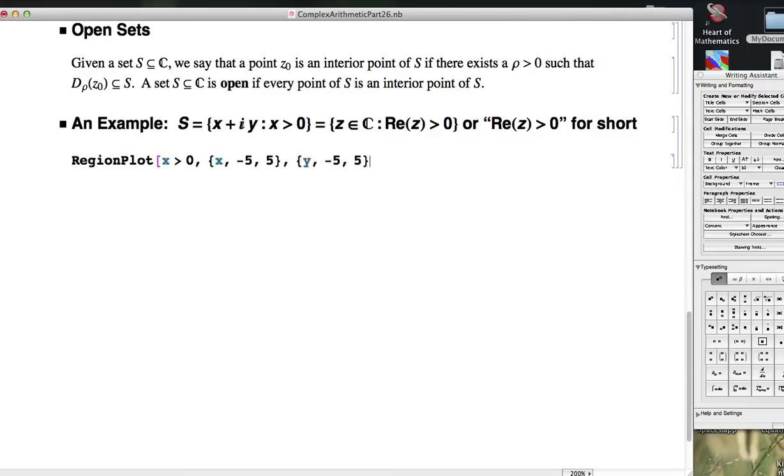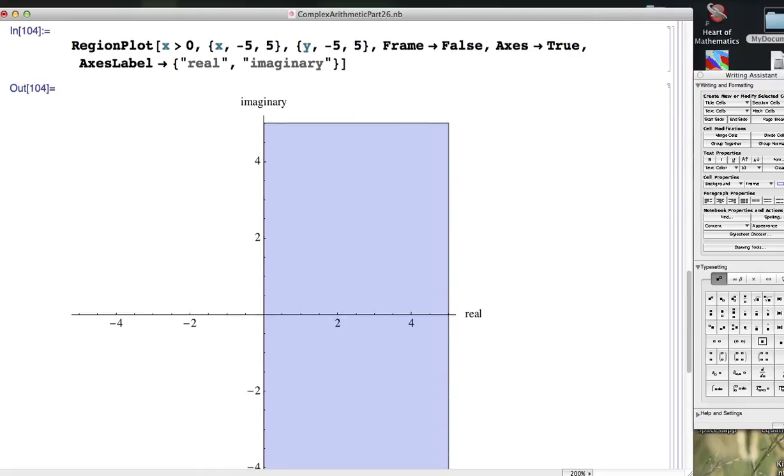And just like in the last video, region plot, as a default, puts a frame around the graph, and I want to get rid of that. It does not put axes in there. I do want the axes in there, and let's label them in the usual way.